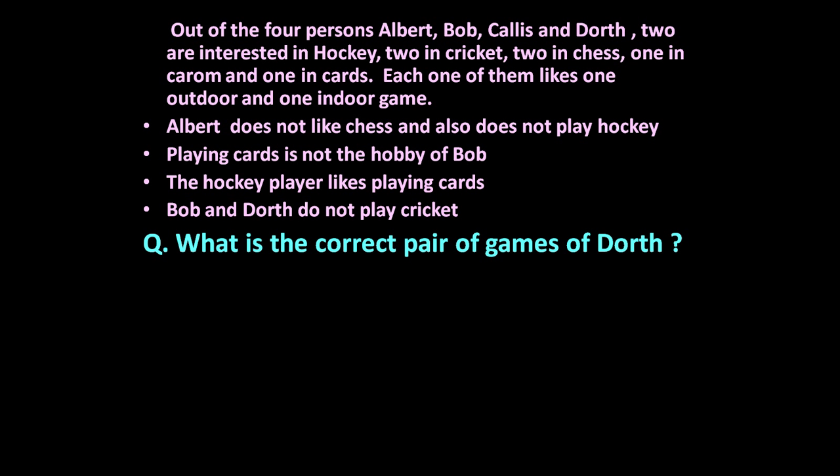Each one of them likes one outdoor and one indoor game. The given conditions are: Albert doesn't like chess and also doesn't play hockey. Playing cards is not the hobby of Bob. The hockey player likes playing cards. Bob and Dorth do not play cricket. Based on this information, the question is: what is the correct pair of games of Dorth?